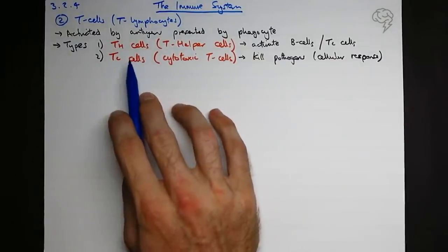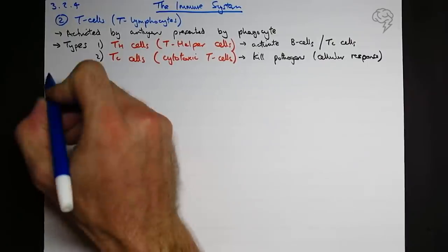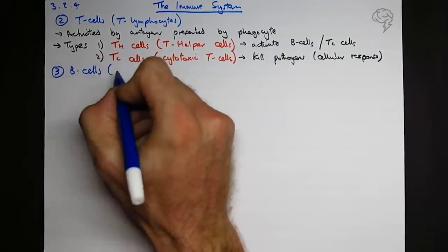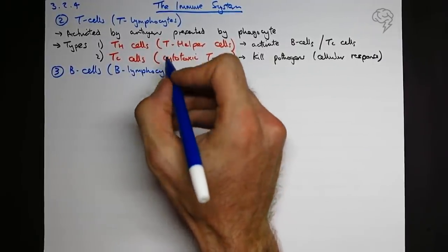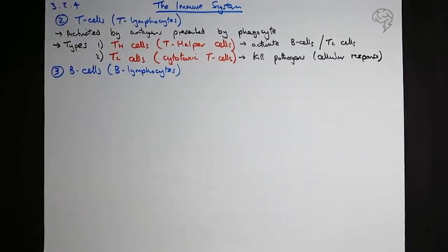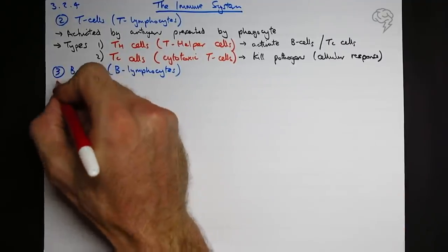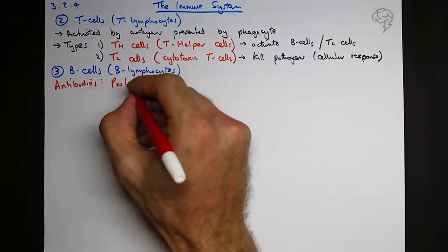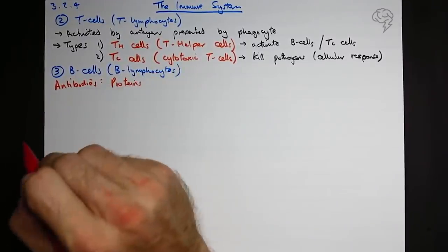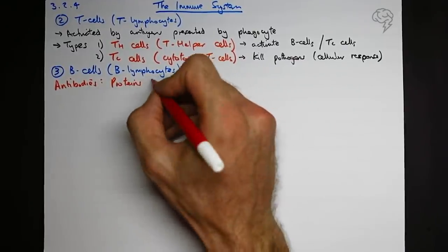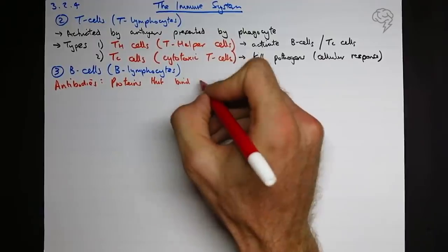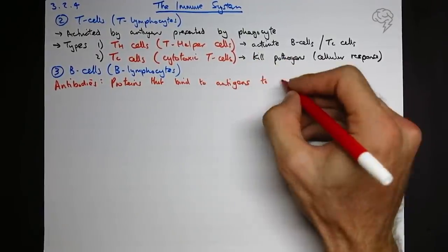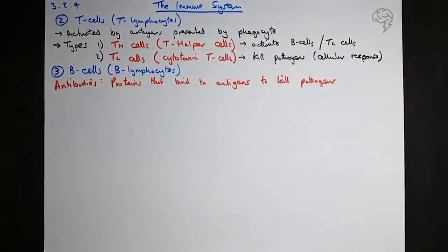Next step, we have B-cells. We can also call these B lymphocytes, also white blood cells. I'm not sure we've defined antibodies yet. Let me take the opportunity. Antibodies, well they're proteins. Remember eats? They are the A of eats. They're proteins, they have a specific shape, but all proteins have a specific shape. Proteins that bind to antigens to kill pathogens. That will do for my basic definition of an antibody.